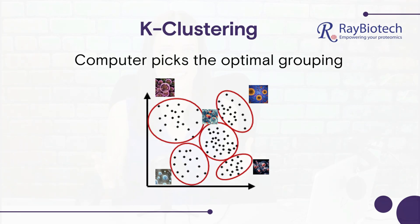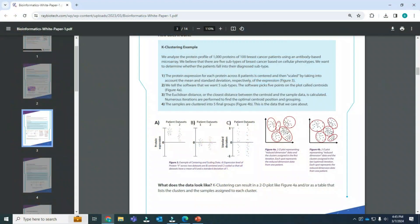So what does it look like? K-clustering results in a 2D plot like this one, and/or as a table that lists the clusters and samples assigned to one another. This plot represents the data assigned by the first iteration and the last iteration.